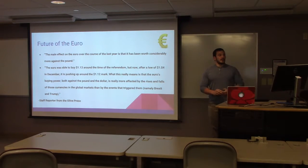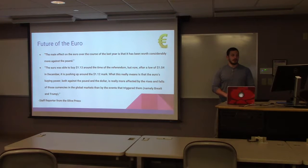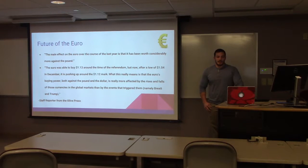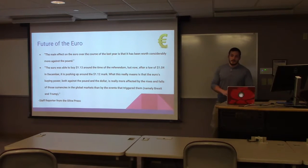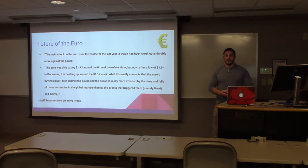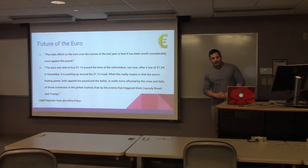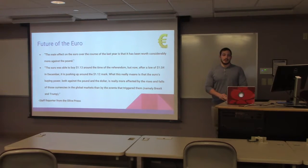Also stated was that the euro was able to buy 1.13 around the time of the referendum, but after a low of 1.04 in December, it is pushing back up around the 1.12 mark. What this really means is that the euro's buying power, both against the pound and the dollar, is more affected by the rise and falls of currencies in global markets and the events that triggered them — mainly Brexit and the election of Trump. The pound is taking the largest hit, unlike the euro, which is being decided more by the world market rather than just the European market — unlike the pound, which is being directly affected by Brexit.